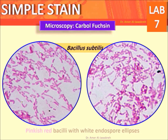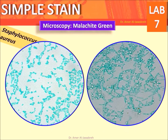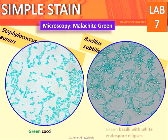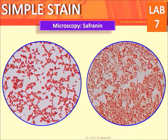Microscopy results — carbol fuchsin: Bacillus subtilis appears as pinkish-red bacilli with white endospore ellipses. Malachite green: Staphylococcus aureus appears as green cocci. Bacillus subtilis appears as green bacilli with white endospore ellipses.